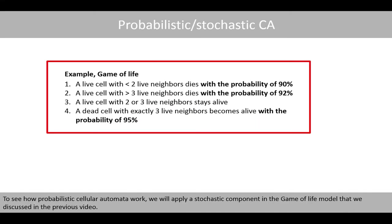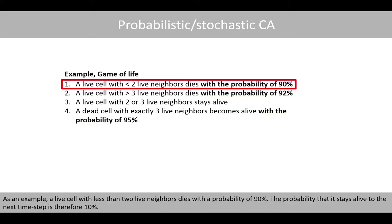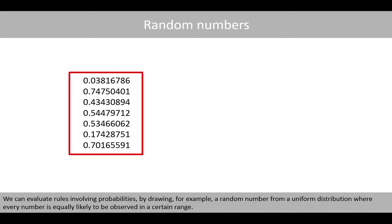To see how probabilistic cellular automata work, we'll first apply a stochastic component in the Game of Life model that we discussed in the previous video. Probabilistic cellular automata involve a random event when updating certain rules. As an example, a live cell with less than two live neighbors dies with a probability of 90%. The probability that it stays alive to the next time step is therefore 10%. We can evaluate rules involving probabilities by drawing a random number from a uniform distribution where every number is equally likely to be observed in a certain range.